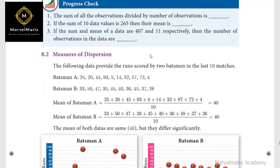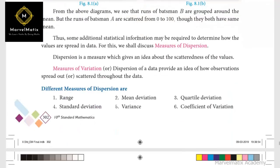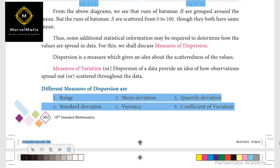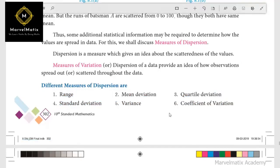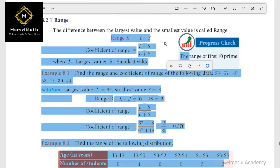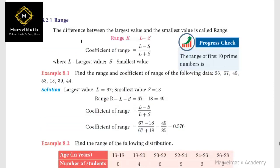So next topic: measures of dispersion. In the example, I will tell you about questions. I will tell you one mark. Dispersion is a measure which gives an idea of scatterness. Dispersion is a measure of variation. The difference between values — a measure of variation. Range is a 2-mark topic. Co-efficient of range. Range is a measure of variation. The largest value is a measure of variation.